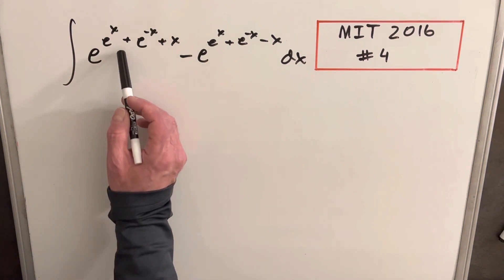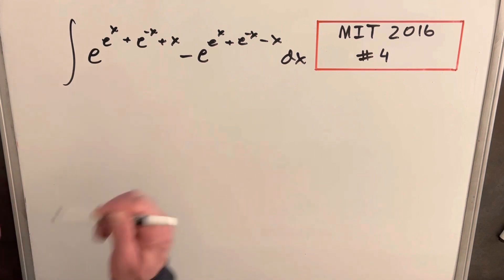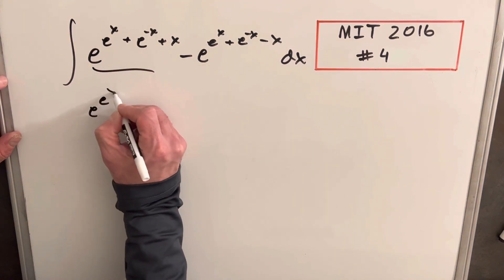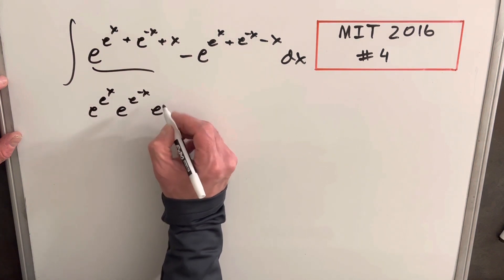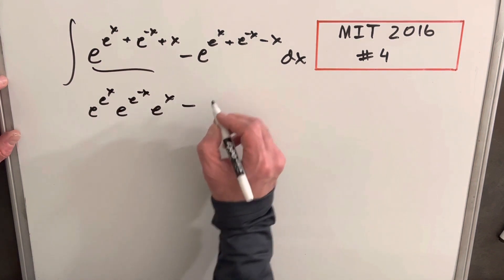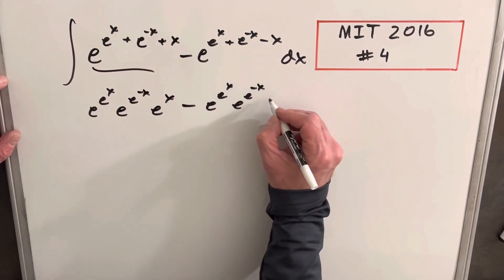The other thing I want to notice, they're adding the exponents here, but this could be written as multiplication. For example, this here could be written as e to the e to the x times e to the e to the minus x times e to the x, and then this piece, the same way, pretty much because it's so similar. We could write it like this.